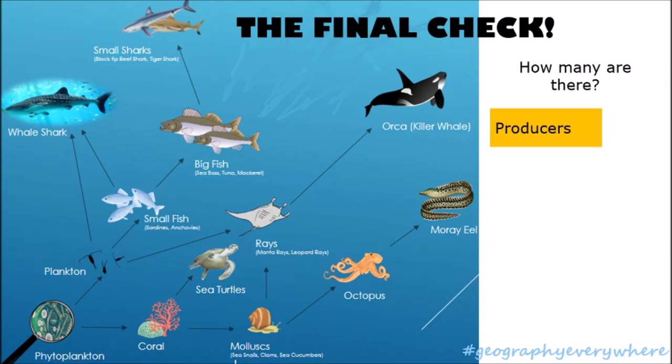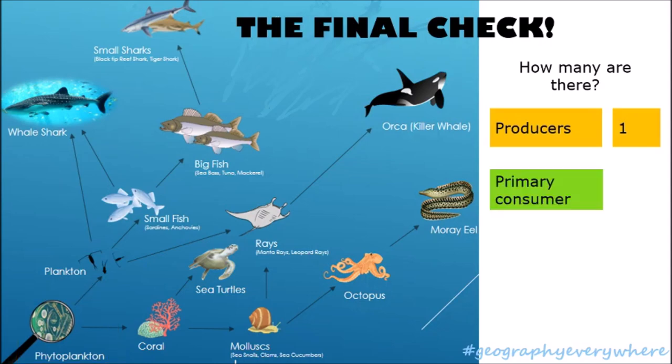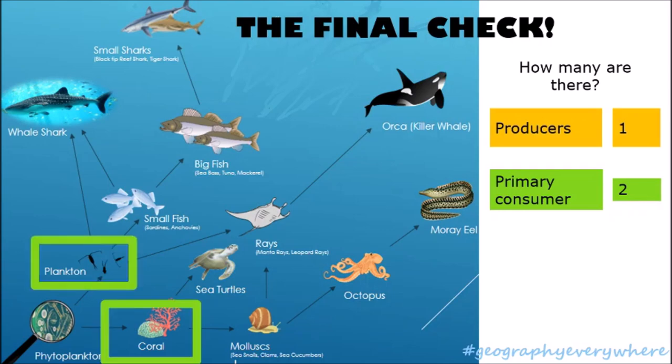How many producers are there? There's only one producer, and that is the phytoplankton. Phytoplankton is the producer that makes its own energy, like a plant. For primary consumers, there are two: the coral and the plankton. Both of them eat phytoplankton, which is the producer.